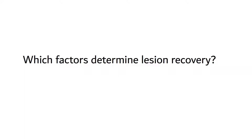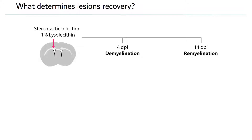One important factor is aging, mainly worked on by Robin Franklin's lab. We wanted to understand the influence of aging on remyelination and whether other factors impair regeneration. The model we use is a toxin-based model where we inject 1% lysolecithin into the white matter of the corpus callosum or spinal cord, then follow the lesions at different time points.